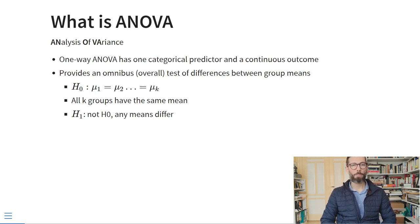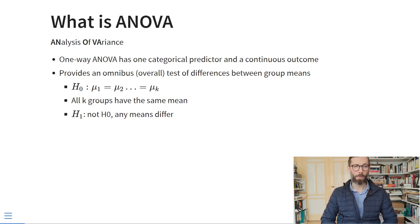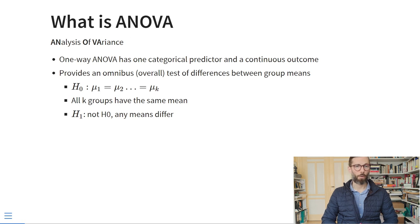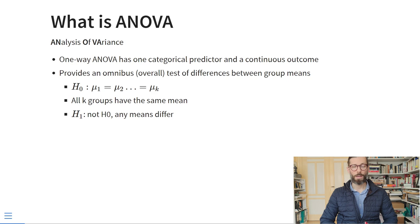By default, the null hypothesis of this omnibus test is typically that all of the means are the same. We can write this as H-null: μ₁ = μ₂ = μ₃ = ... = μₖ, where we assume there are k groups. The implicit alternative hypothesis H1 is that the null hypothesis is not true — so any of these means differ from each other.